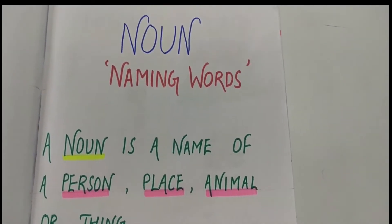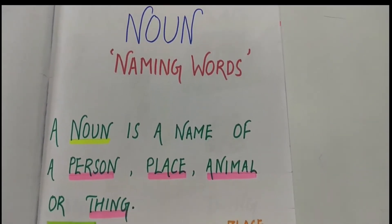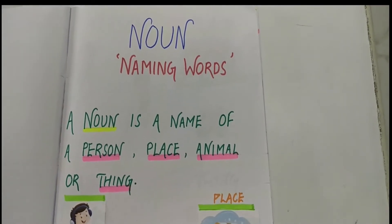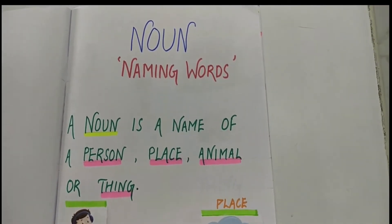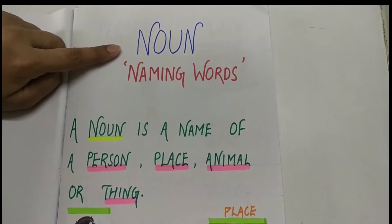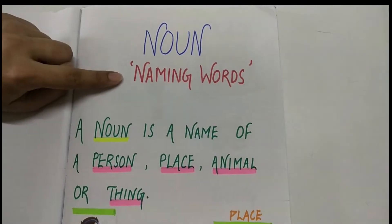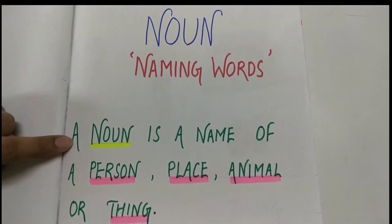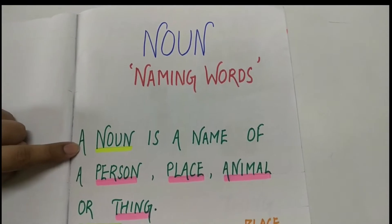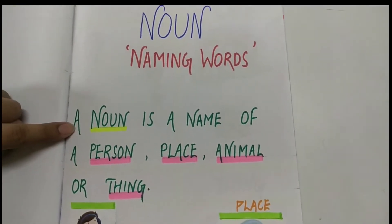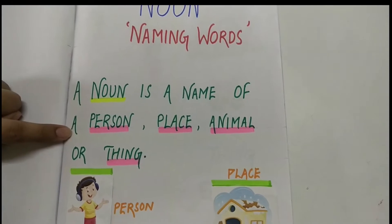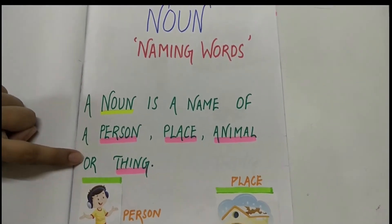Children, everything around us has a name. All these naming words are called Noun — it means Noun are also called naming words. The definition of Noun: a Noun is a name of a person, place, animal, or thing.